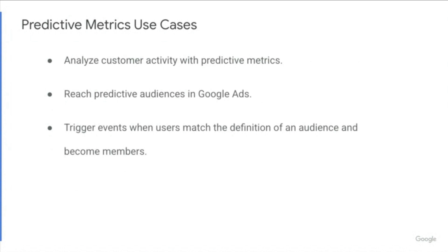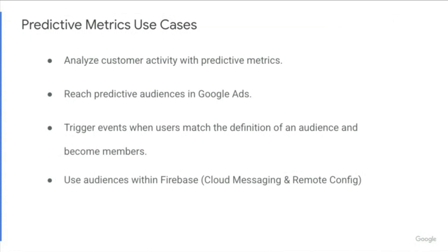This allows for greater actionability to send conversion events to a linked Google Ads account for bidding purposes. And lastly, you can use audiences within Firebase. For example, cloud messaging allows you to send push notifications to your users, or the remote config product allows you to customize or personalize the experience that your users see inside of your app. Now I'm going to do a walkthrough to show you how to create a predictive audience inside of a Google Analytics 4 property.